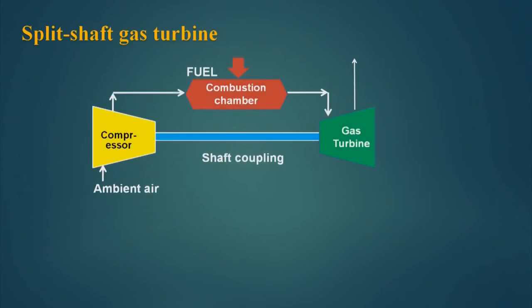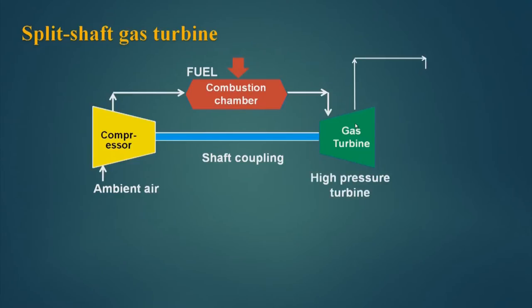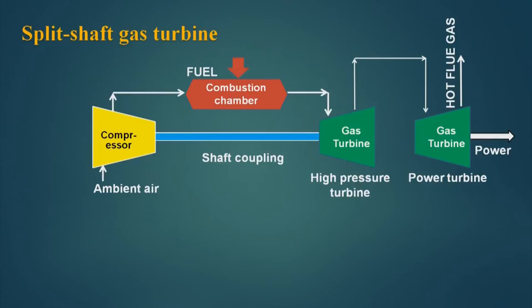Another type is the split shaft gas turbine. Here, ambient air is sucked into the compressor, compressed, and goes to the combustion chamber where fuel is added and ignited. The hot gas goes to the first gas turbine where it expands, then goes to a second gas turbine where it is further expanded and power is generated. The first turbine is exclusively used for driving the compressor. So it is broken into two parts — one gas turbine for running the compressor and the other for generation of power — and the hot flue gas which comes out can be used in the process as hot utility.